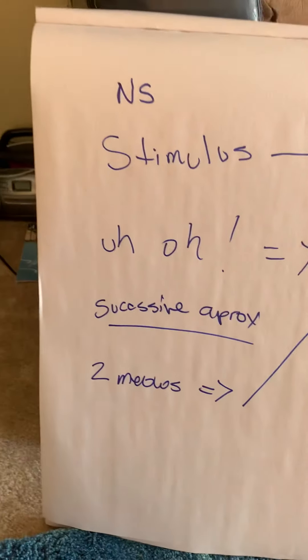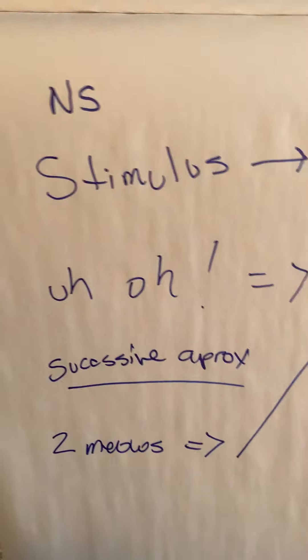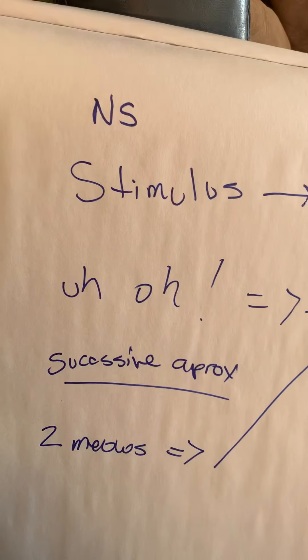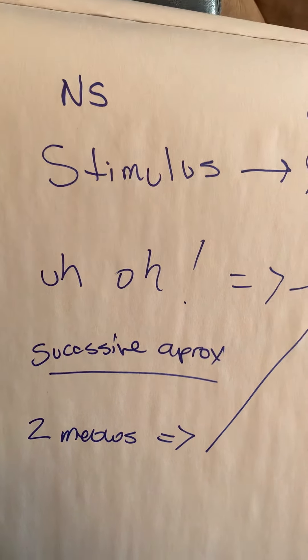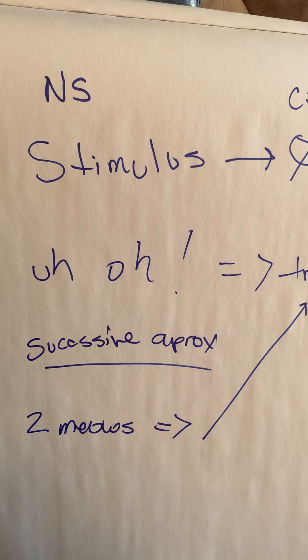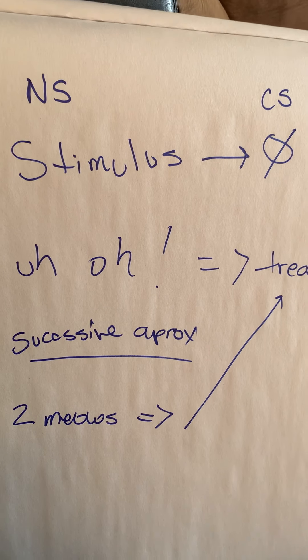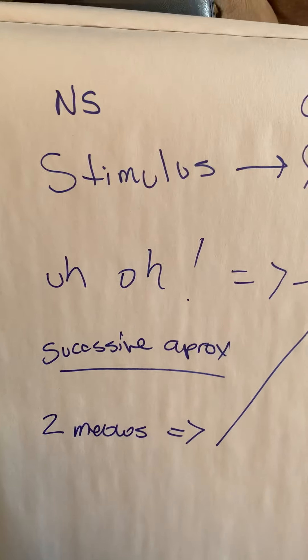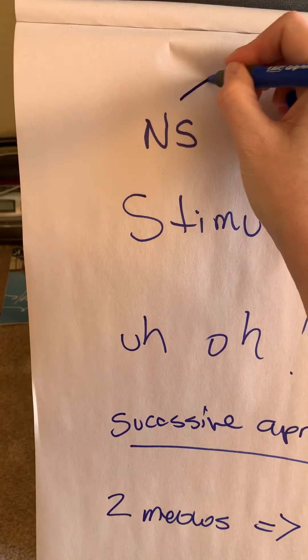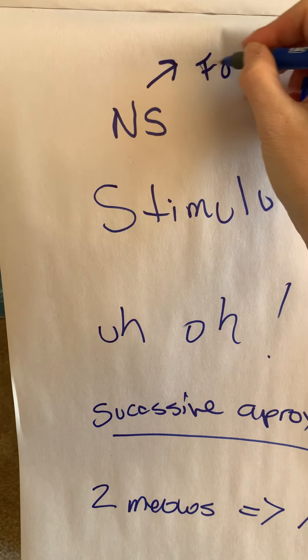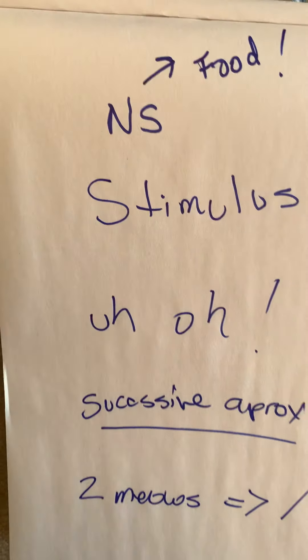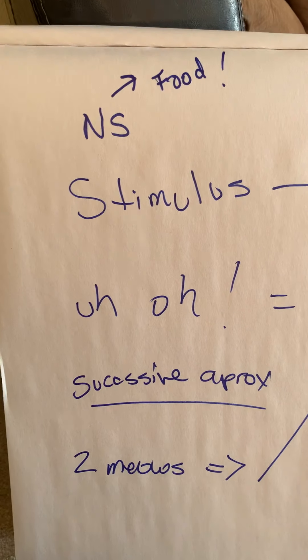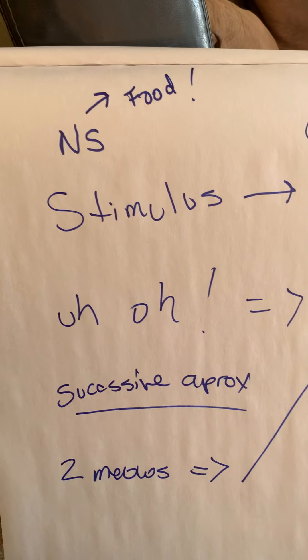He wanted to make something happen that normally a non-conditioned stimulus would make happen. So if we think about it, what could make a dog salivate or what can make a dog slobber? I mean, there are a lot of things that can make me slobber, like chocolate or cake, pizza.